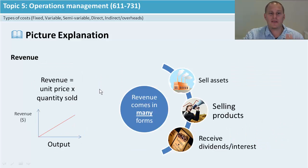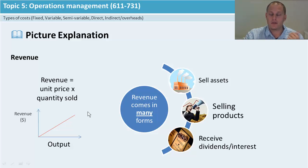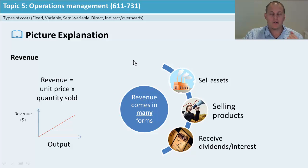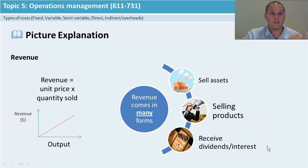The other part you get is revenue. The most basic way of working it out is unit price times quantity sold. So if the price is a dollar and I sell a hundred, my revenue is a hundred dollars. The more output you make, in theory the more revenue you get — constant growth as it goes up. Revenue can come in many forms, linked back to 3.1 sources of finance: selling dormant or fixed assets, selling products, receiving dividends, and interest coming in. All of these go into your sales revenue on profit and loss.